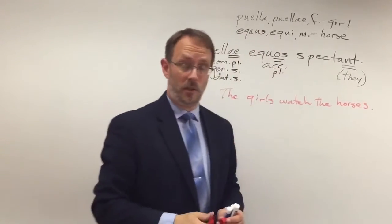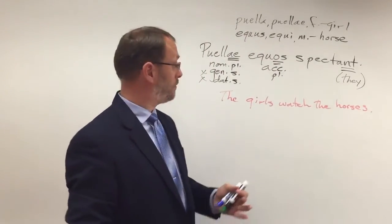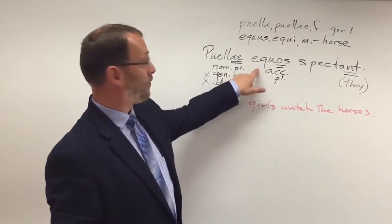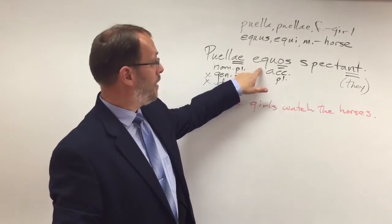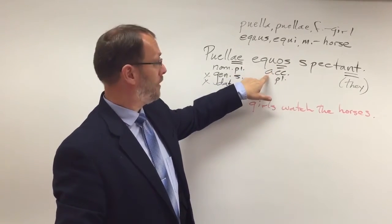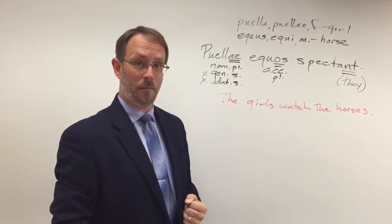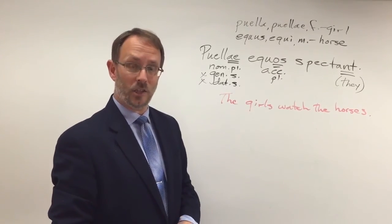Now, it would make just as much sense to say the horses watch the girls. I mean, that certainly could make sense. But I know for a fact that the horses are not doing the action because that O-S, accusative ending, means they are receiving the action as the direct object. And that gives us a look at second declension nouns.